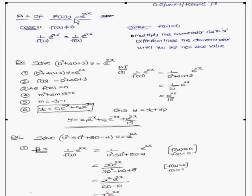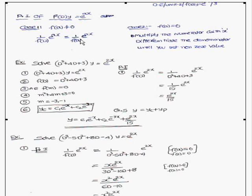To find the particular integral when the right hand side is e^(ax), we have two cases. Case 1: if f(a) ≠ 0, the particular integral is e^(ax) / f(a). Case 2: if f(a) = 0, multiply the numerator by x and differentiate the denominator until you get a non-zero value.